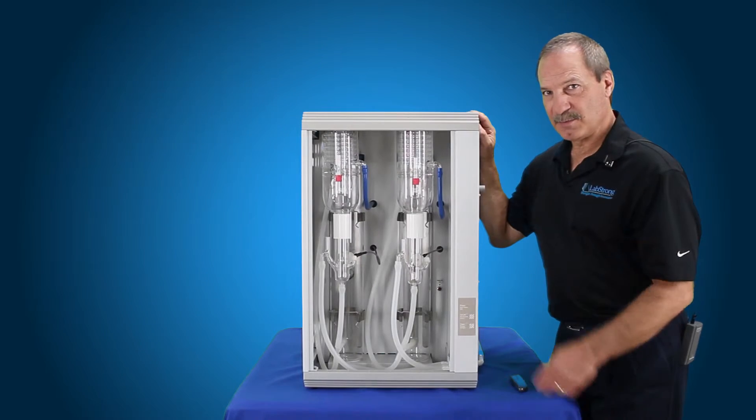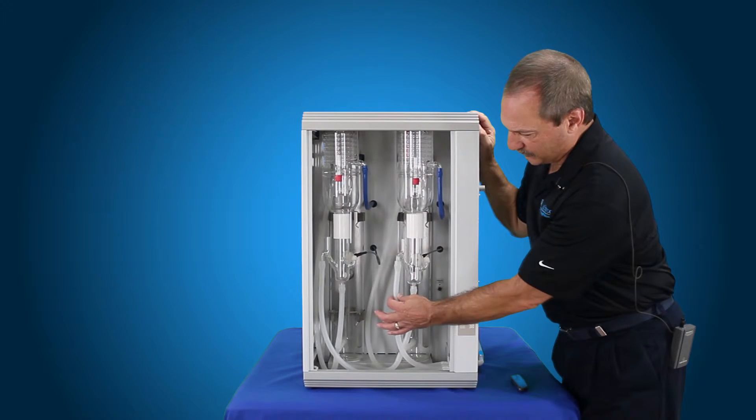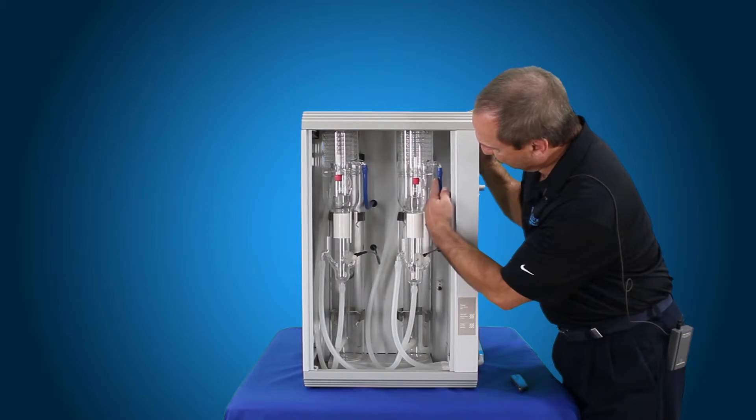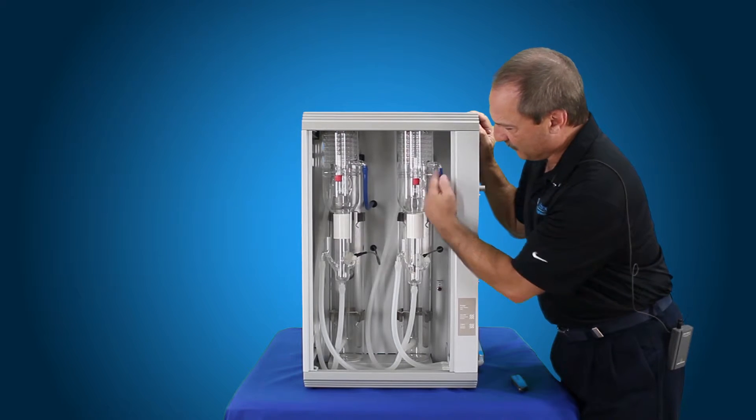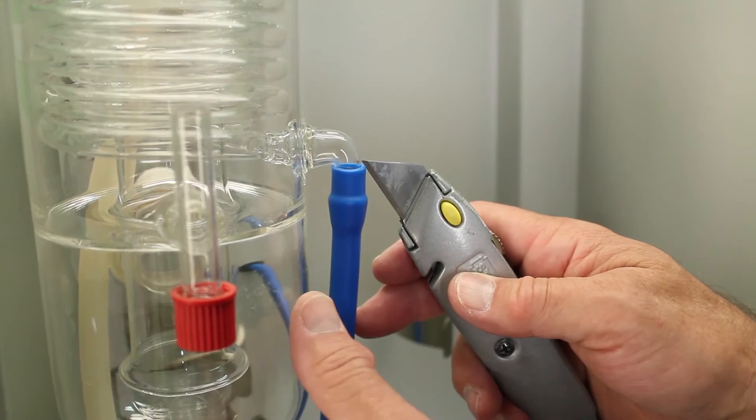Now all the tubing is pretty much the same when you remove it. They're all going to be adhered to the glass, so your overflow for your constant level device, the fill for your constant level device, and the blue tubing for your condenser, that's going to be the same thing. You're just going to take a knife and cut it lengthways.